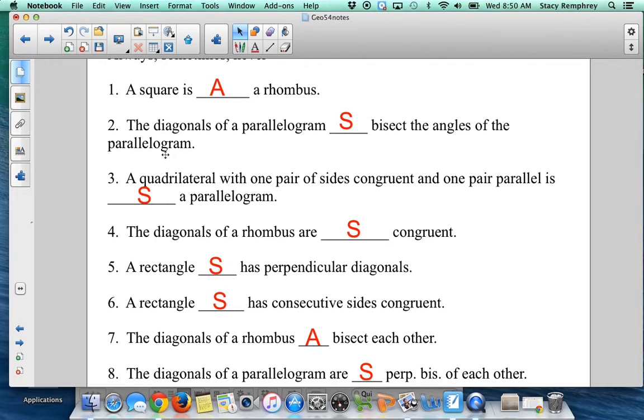All right, coming back. A square is always a rhombus. A square is always going to have four congruent sides. The diagonals of a parallelogram sometimes bisect the angles. That's only going to be true if the parallelogram has four congruent sides.